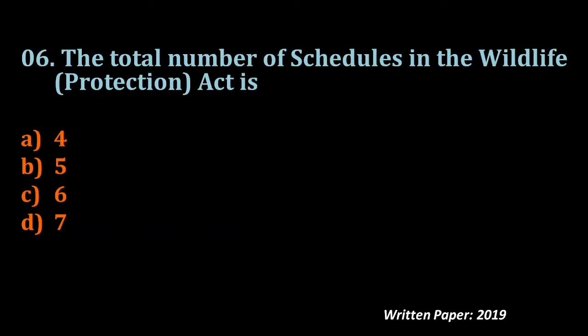Question number six: The total number of schedules in the Wildlife Protection Act. The answer is six — there are six schedules in the Wildlife Protection Act. Through these schedules, animals and plants are classified and given different protection strategies. I will discuss this act in detail for your exam preparation, so please stay tuned to my channel.